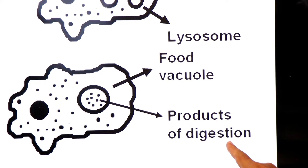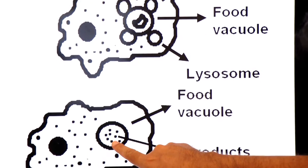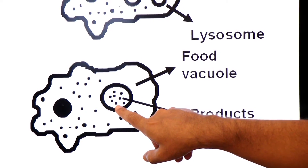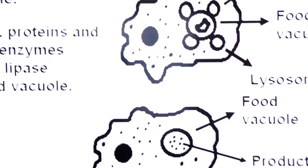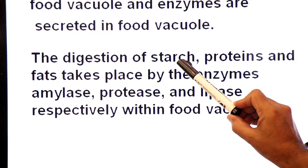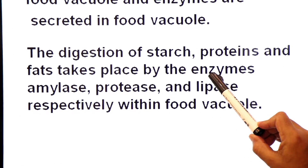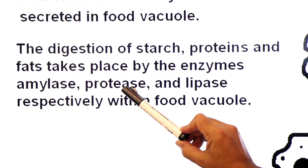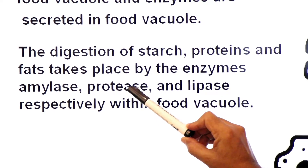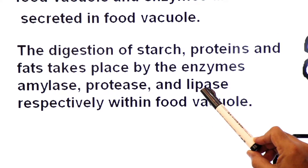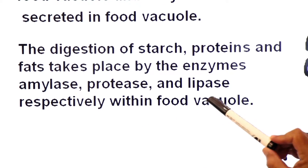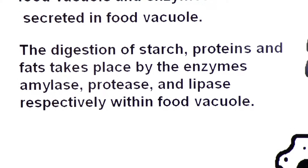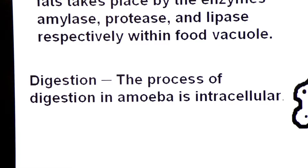The digestion of starch, proteins, and fats takes place by specific enzymes: amylase (sugar-breaking enzyme) digests starch; protease (protein-breaking enzyme) digests proteins into amino acids; and lipase (lipid-breaking enzyme) digests lipids — all respectively within the food vacuole.